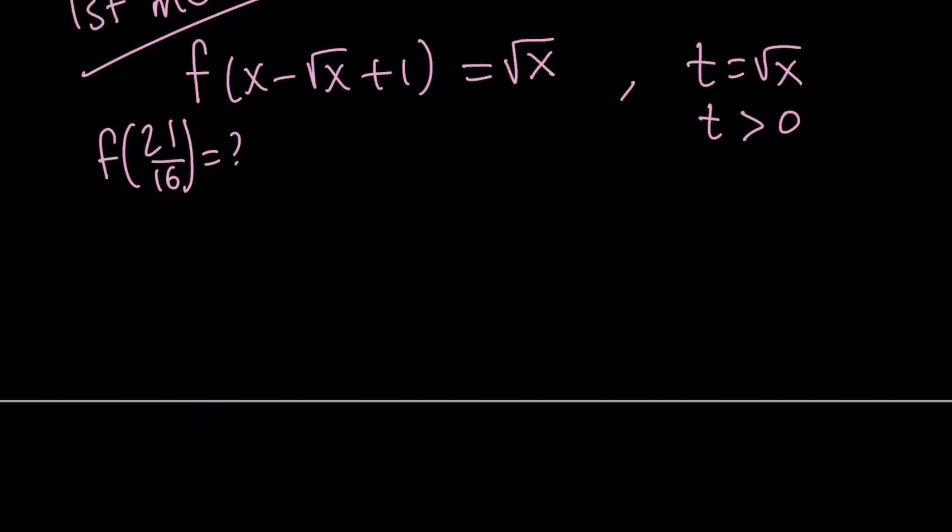Now when you do that substitution here, you're going to get f of t squared, because if you square both sides you get t squared equals x. So it's going to be t squared minus t plus 1 equals t.